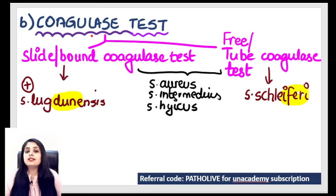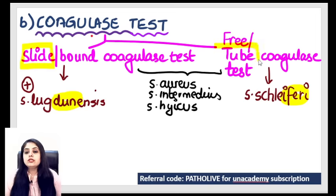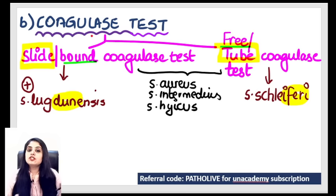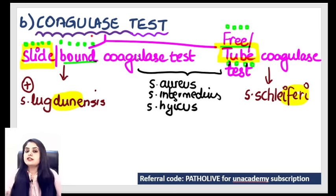There's also the coagulase test, which can be done on a slide or in a test tube. The slide coagulase test is the bound coagulase test; the test tube coagulase test is the free coagulase test. Memory tip: count alphabets — 'free' has four, 'tube' has four, so they're the same; 'slide' has five, 'bound' has five, so they're the same. Staphylococcus aureus, intermedius, and hyicus show both tests positive. Lugdunensis ('dun' sounds like 'bound') is only bound test positive. Schlieferi ('feri' sounds like 'free') is only free coagulase test positive.